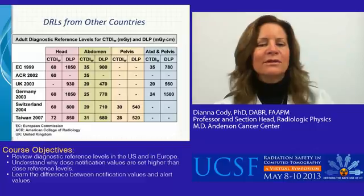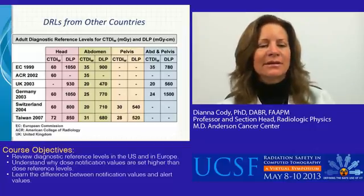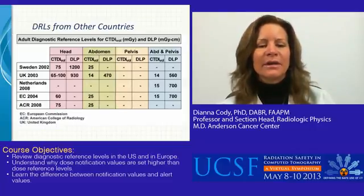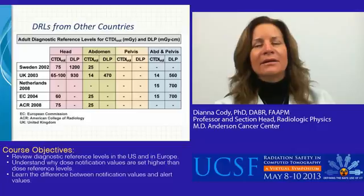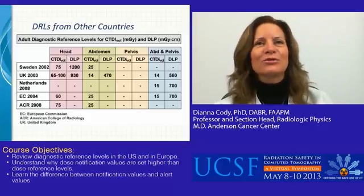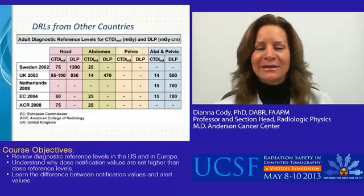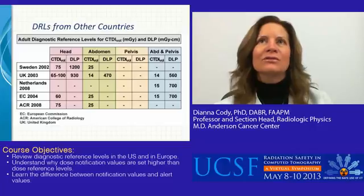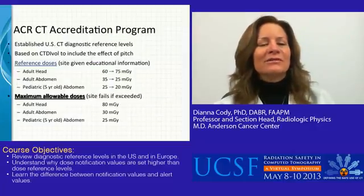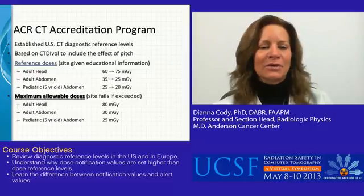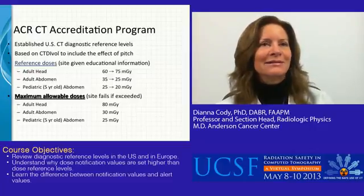Another approach is to use the CTDIvol, which is a little more modern because it accounts for helical pitch. We see again adult diagnostic reference levels for the same four exams from a shorter list of countries, and again you can see there is a range of values in every column. In America, there may be a little bit of reluctance to embrace some of the European community diagnostic reference levels, because we practice medicine in a different way and our population is a different size. There are some established US CT diagnostic reference levels that have come out of the American College of Radiology CT accreditation program.